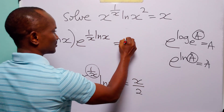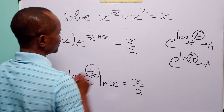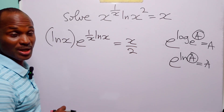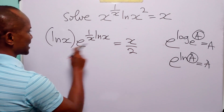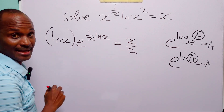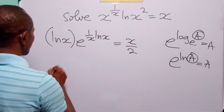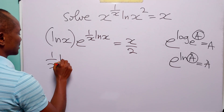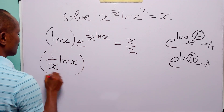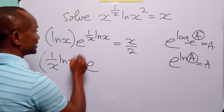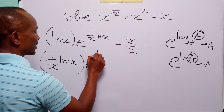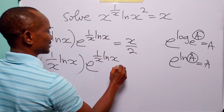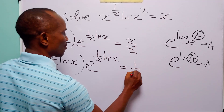This is still equal to x over 2. Next, we divide both sides of this equation by x. When we do that, we have 1 over x times ln x, multiplied by e to the power 1 over x times ln x, is equal to 1 over 2.